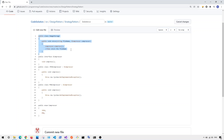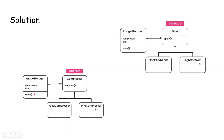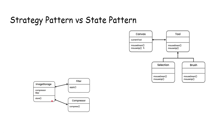Now you might be wondering: what's the difference between strategy pattern and state pattern? If you don't know what state pattern is, I have a video on my channel about it. For strategy pattern and state pattern, they're both trying to change behavior without changing the current context. For strategy pattern, we can change the behavior of ImageStorage — for example, change the compressor to JPEG or PNG, or change the filter to black-and-white or high-contrast — without changing anything inside the class. For state pattern it's very similar: we change the current tool to something like a selection tool or brush tool, all implementing the tool interface which supports mouse down and mouse up functionality.